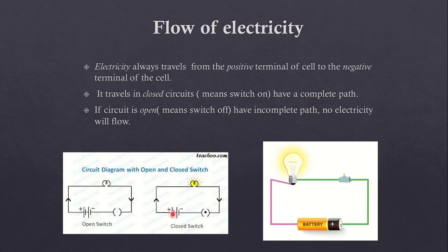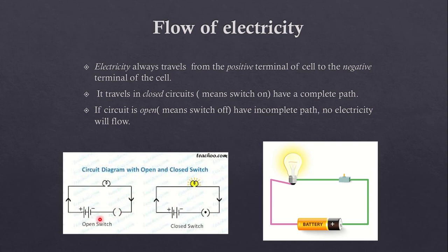Here the switch is on, so electricity will flow from the positive terminal of the cell to the negative terminal of the cell, and the bulb will glow. Here the switch is off — off switch means open switch. When the circuit is open, current will not flow. Open circuit means if we switch off the circuit, or there is any kind of breakage in the wire or breakage in the filament, then the circuit is open and current will not flow.